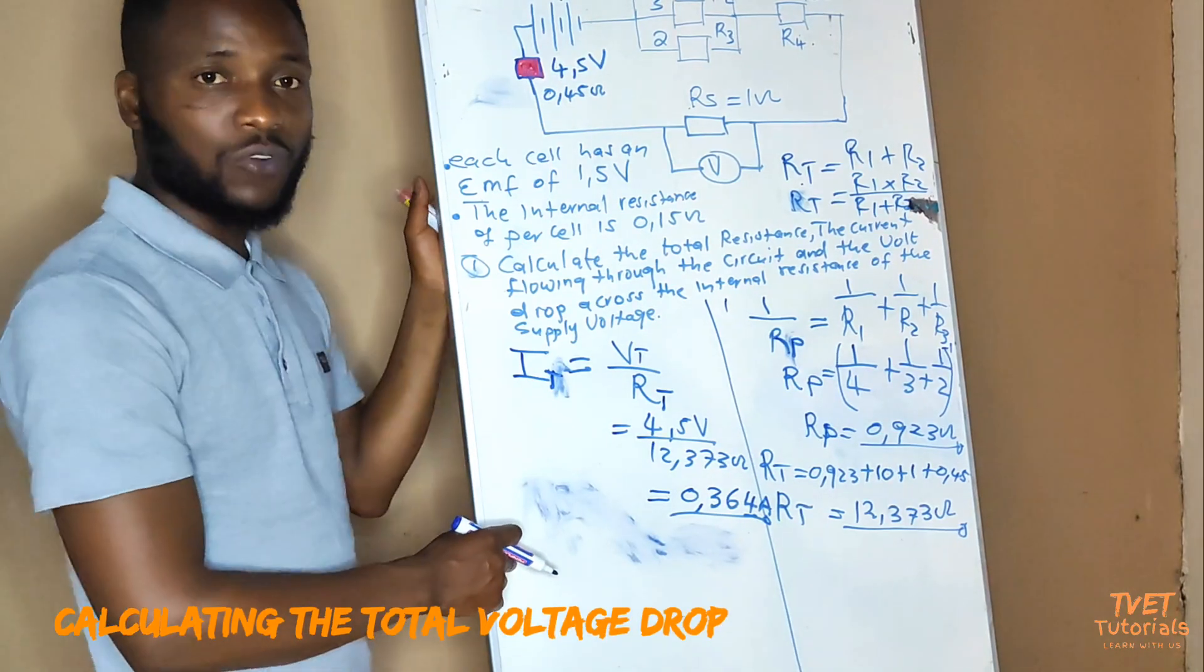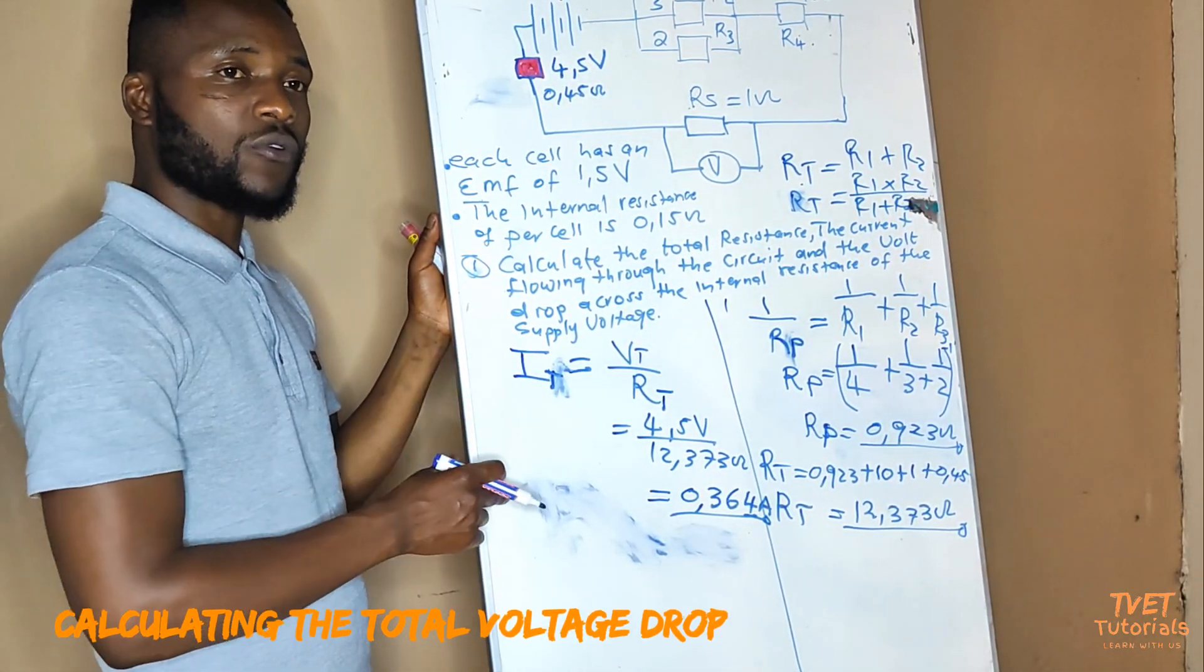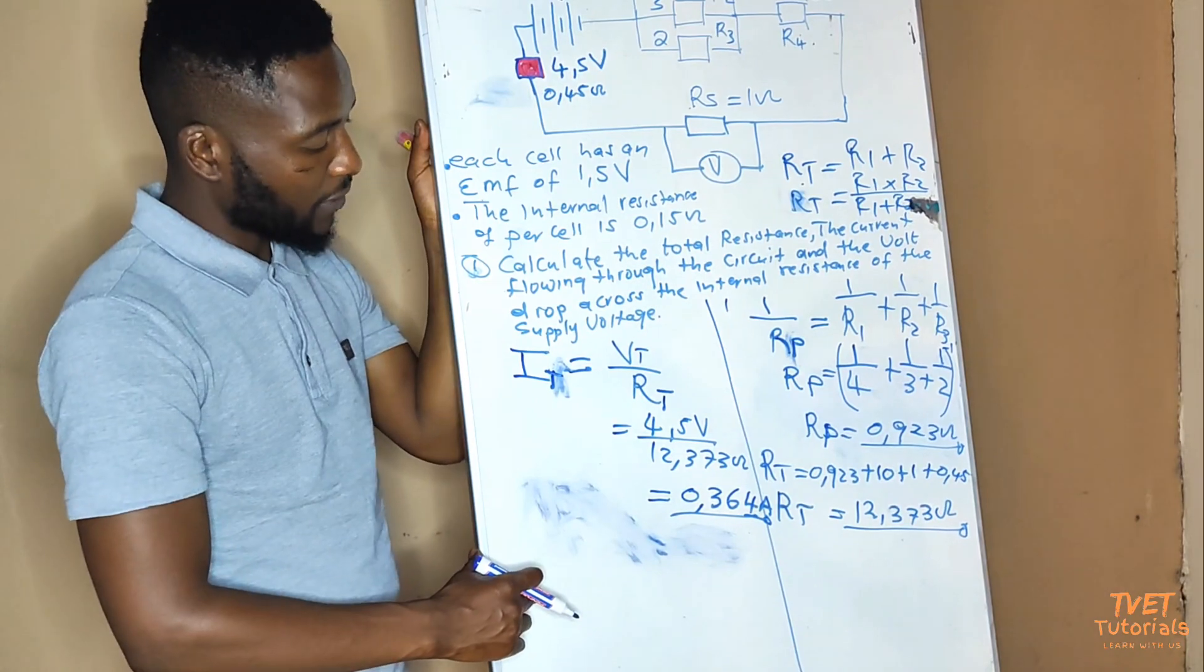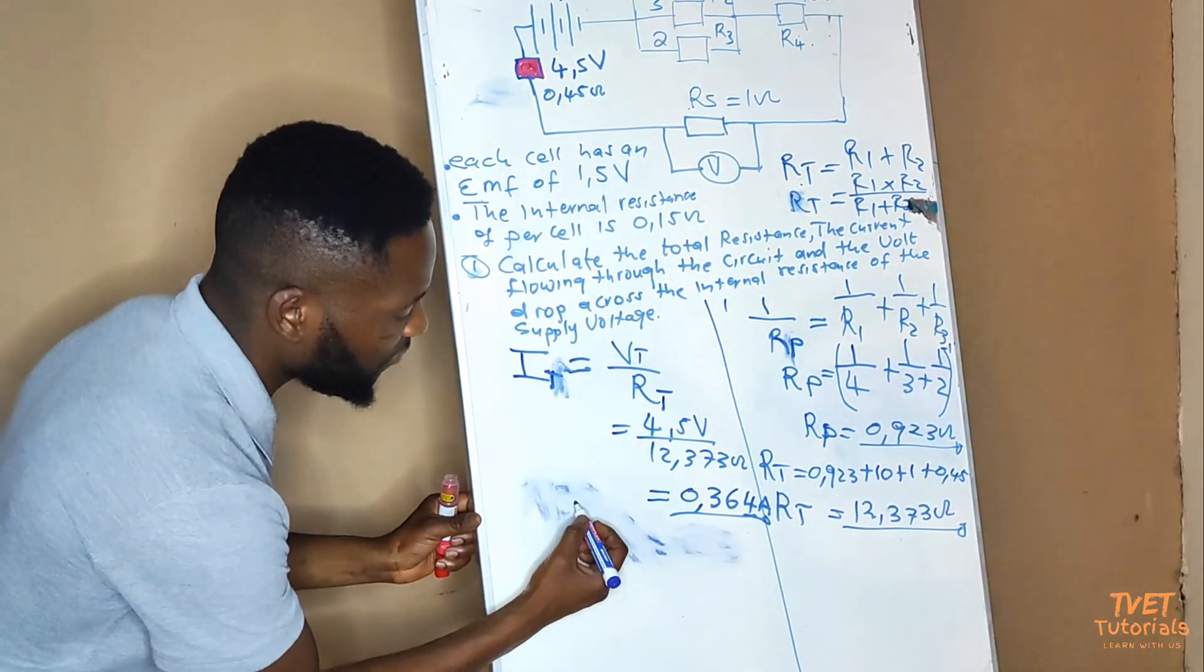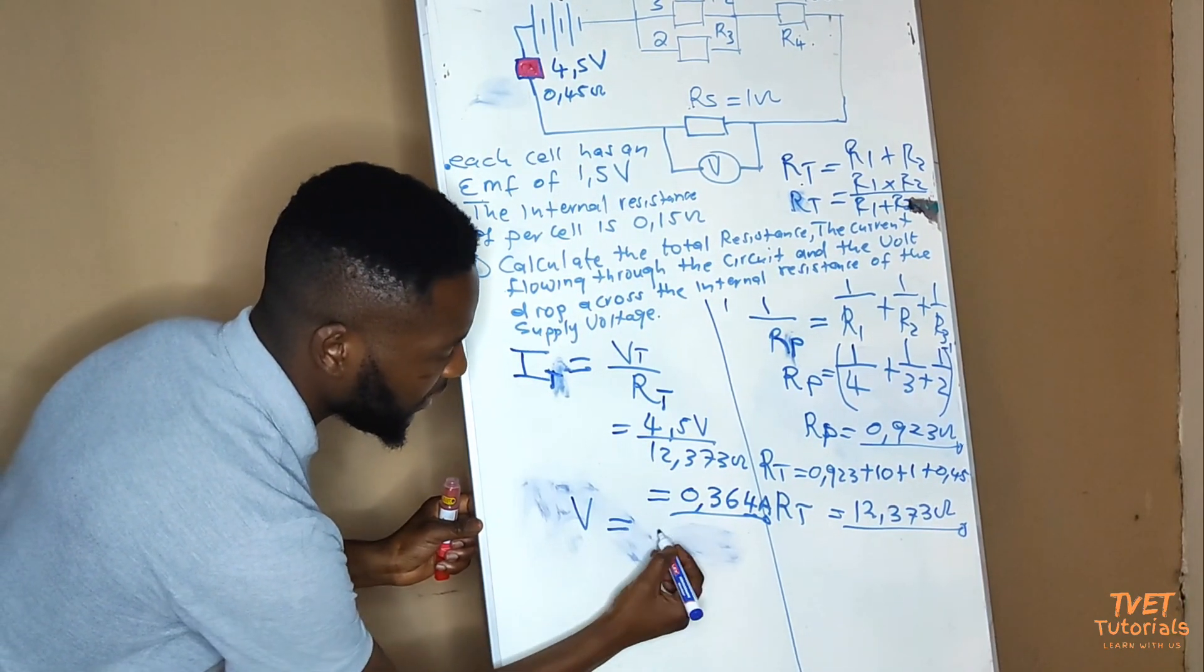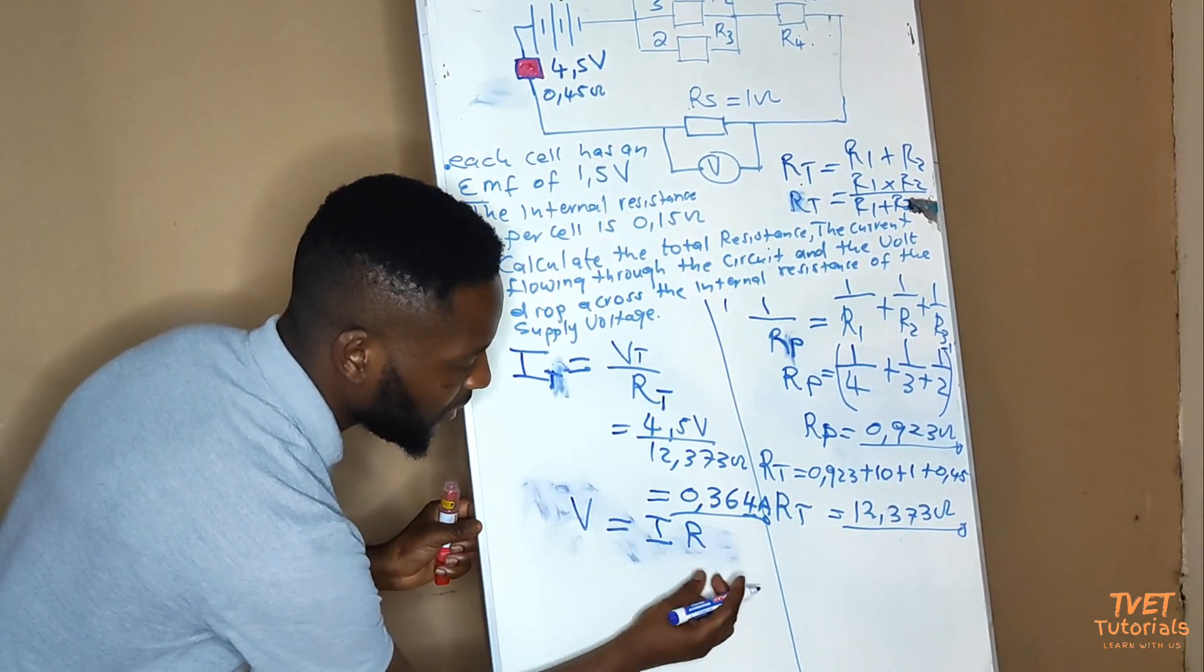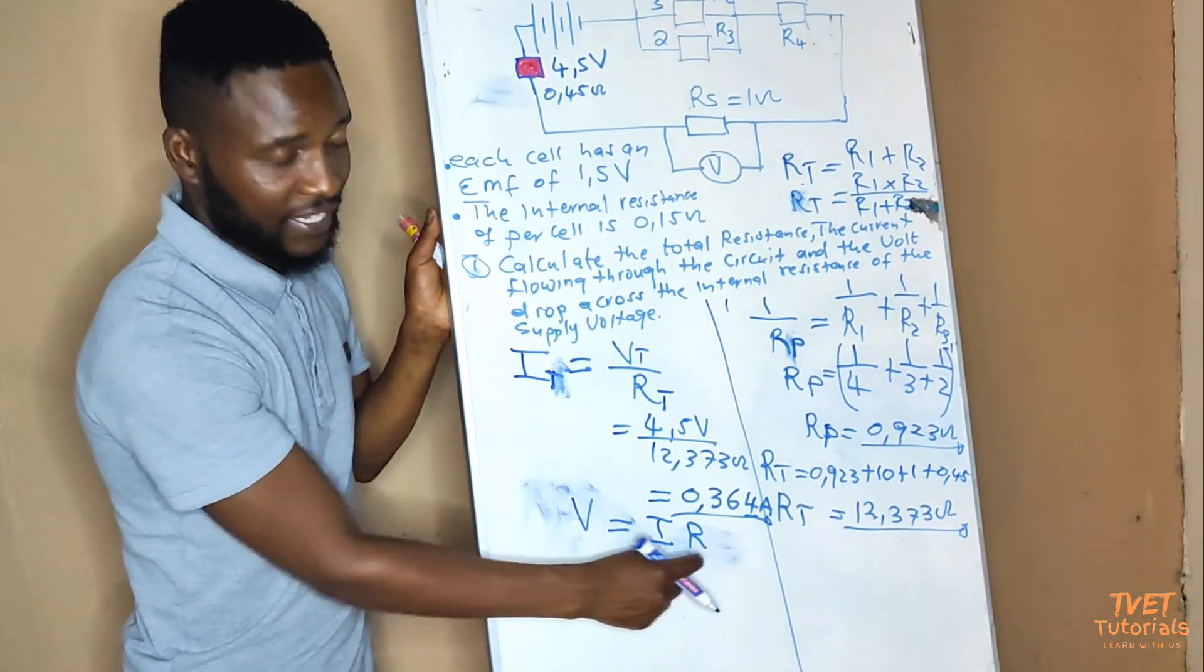To calculate this voltage drop, we are going to apply Ohm's law, where we make V the subject of the formula. So when we make V the subject of the formula, we'll have an equation like this: V equals I, which is the current, times R, which is the resistance.